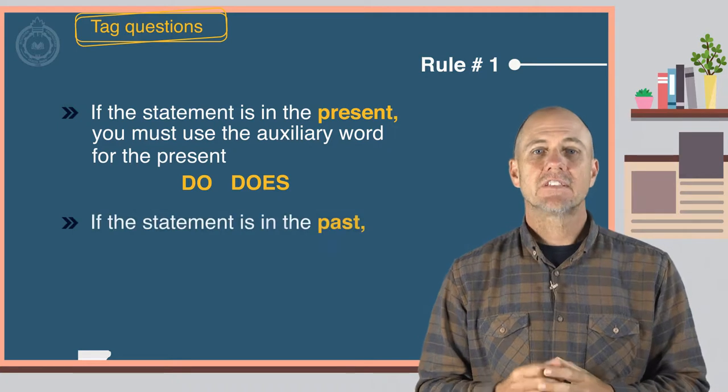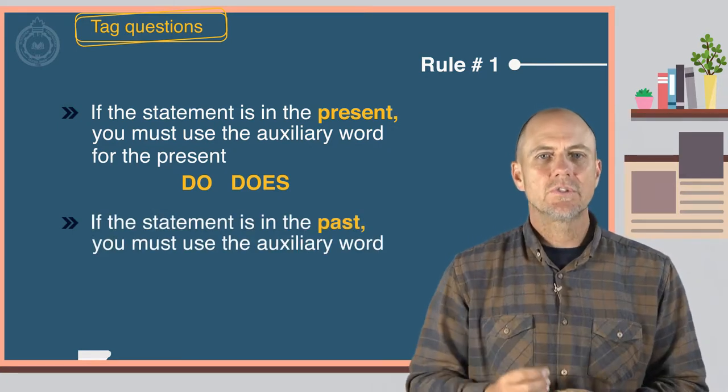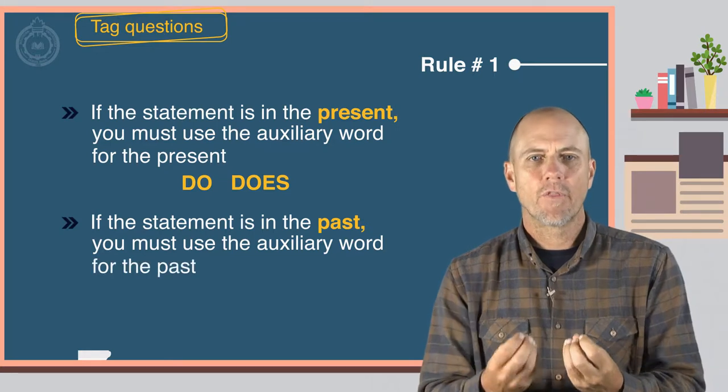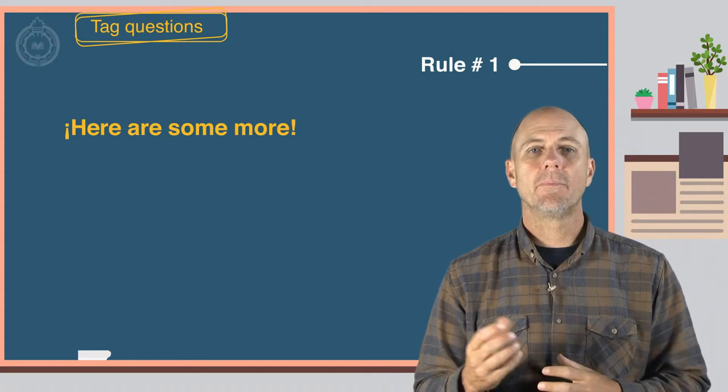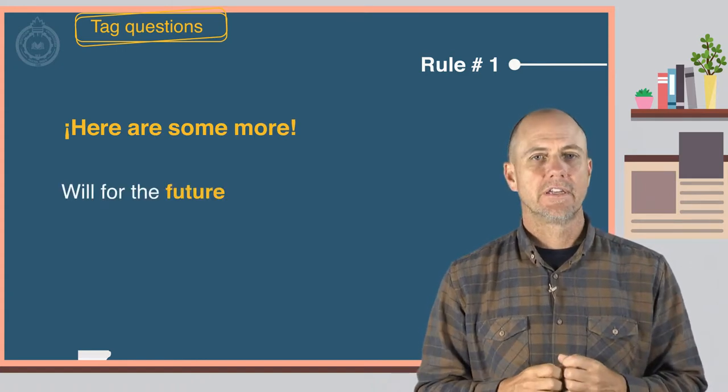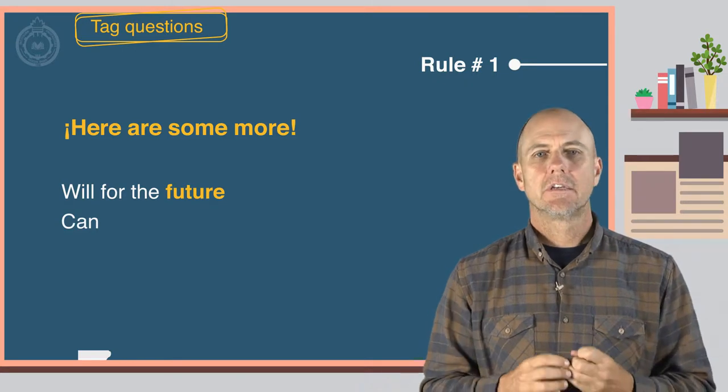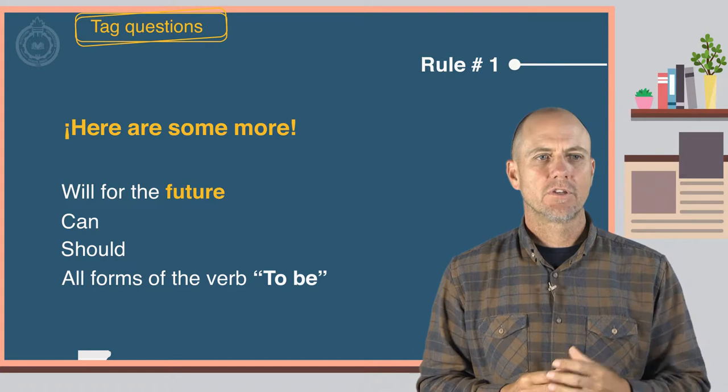If the statement is in the past, you must use the auxiliary word for the past, did. Here are some more. Will is for the future. Can, should, all forms of the verb to be.